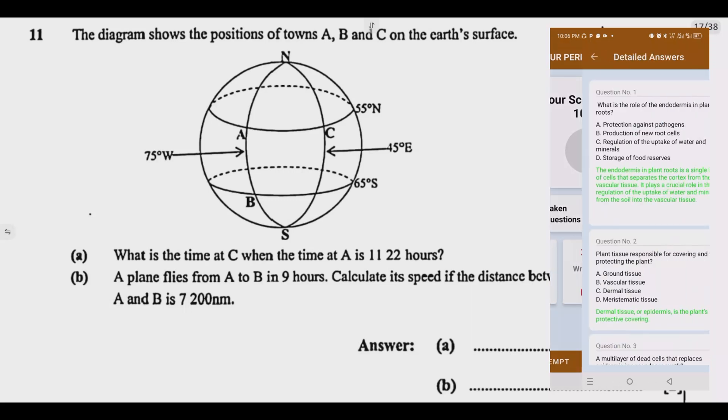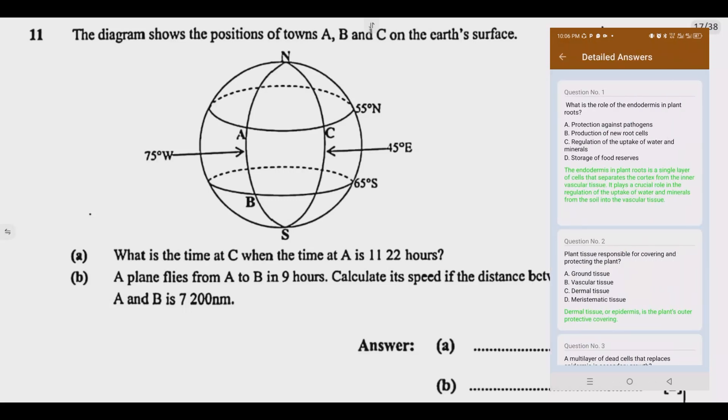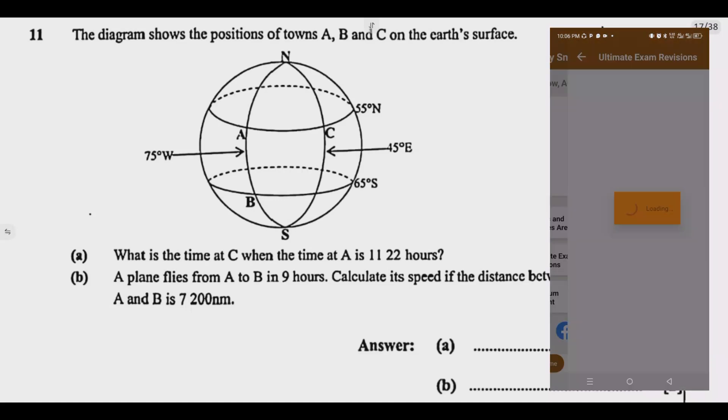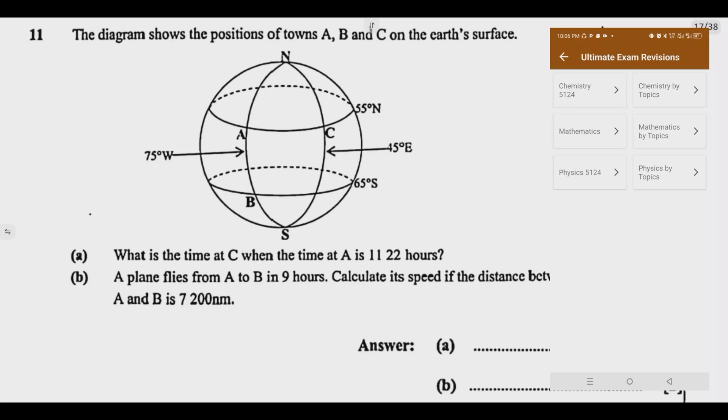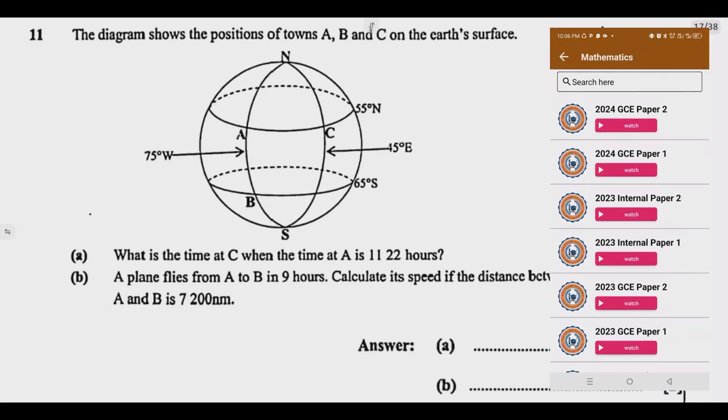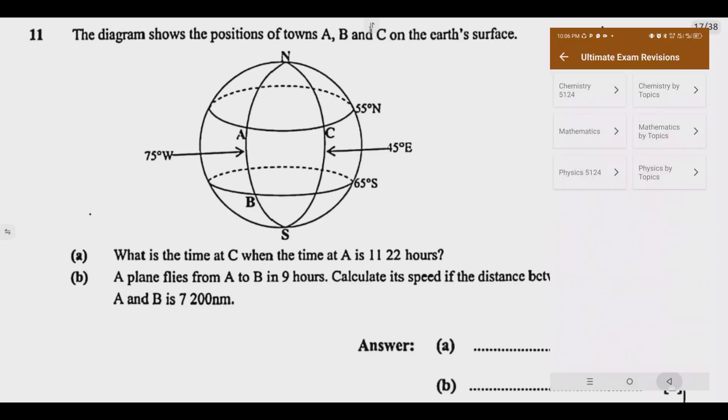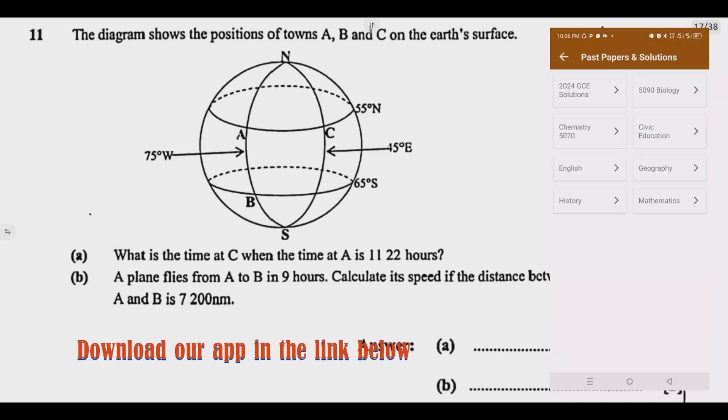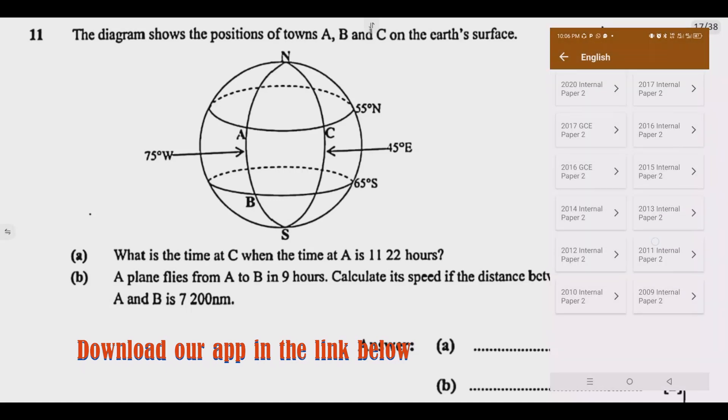B: a plane flies from A to B in 9 hours. Calculate its speed if the distance between A and B is 7200 nautical miles. Again, this question is given away. It's always one of the questions that comes where they ask you to find the speed, find the distance, or find the time.